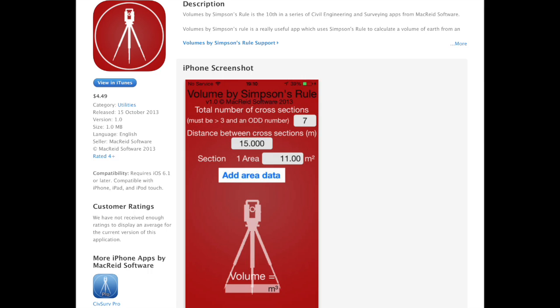This app takes the number of cross-sections you have, the area for each one, and then calculates the volume by Simpson's rule automatically.